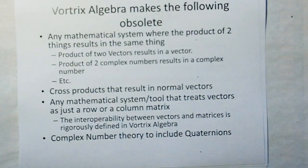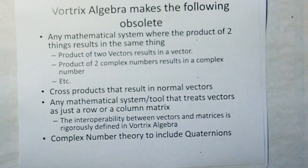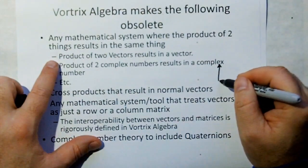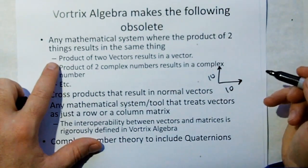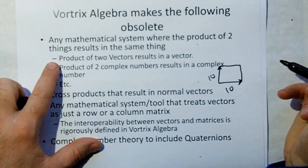Vortrix Algebra makes the following obsolete: any mathematical system where the product of two things results in the same thing. Like in classical vectors, the cross-product of two vectors is a vector. That's completely wrong. Here's the way you can resolve it. If I have two lines of 10 feet by 10 feet, by multiplying those, I get an area of 100 square feet. I don't get another line.